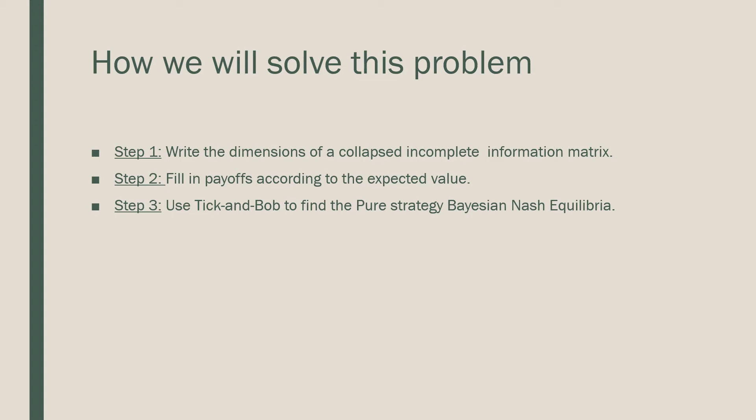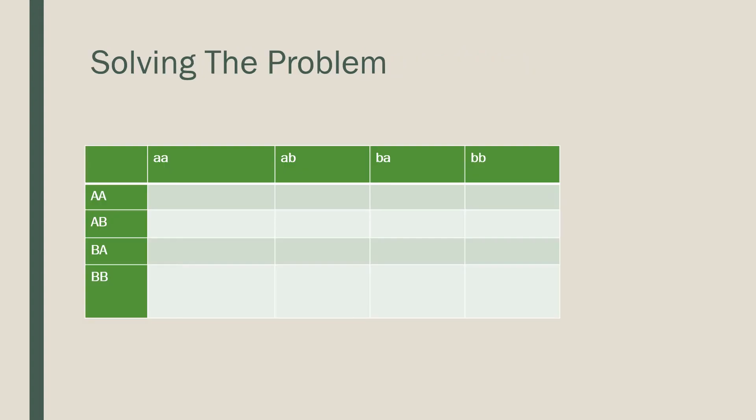If the probabilities were different, we'd use a weighted average. Step number three is that we're going to use a tick and bob method to find all the pure strategy Bayesian Nash equilibria. So step number one is that we're going to write our matrix.